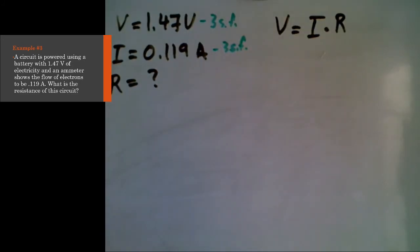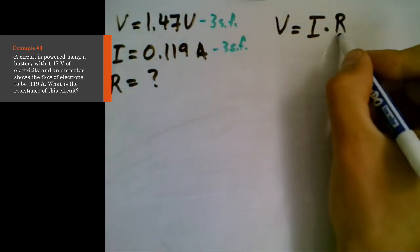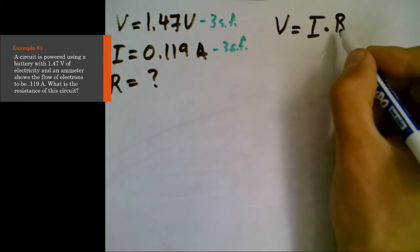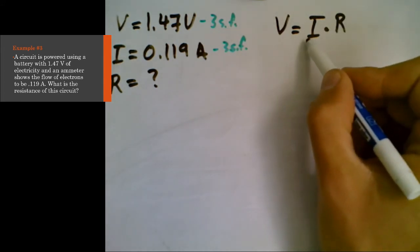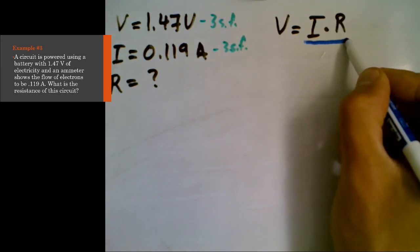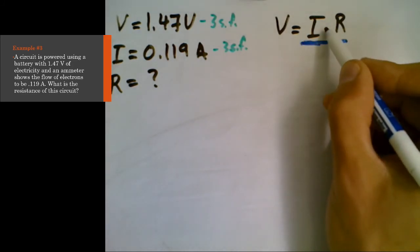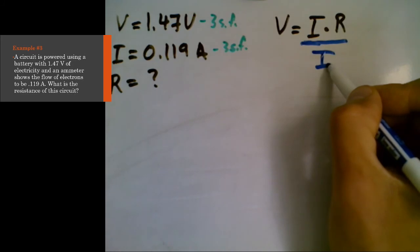So based on V, I, and R being the variables that we have, we need to use Ohm's law. And we need to rearrange this time in order to solve for R. So we need to isolate R. So again, look at the operation being done to R. It's being multiplied by I. So do the opposite operation, that's dividing.